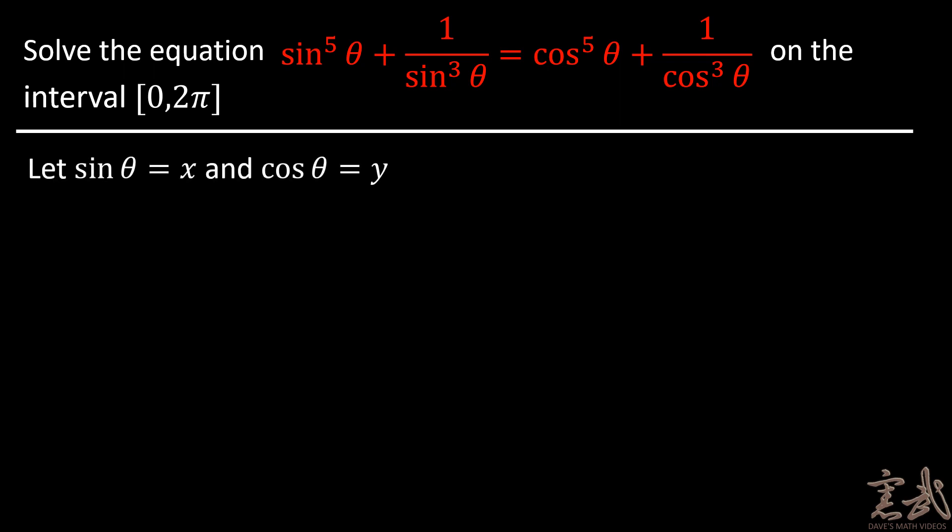So to let me fit everything on the screen a little bit easier, I will let sine of theta equal x and cosine of theta equal y. This leaves me with x to the fifth plus 1 over x cubed is equal to y to the fifth power plus 1 over y cubed.